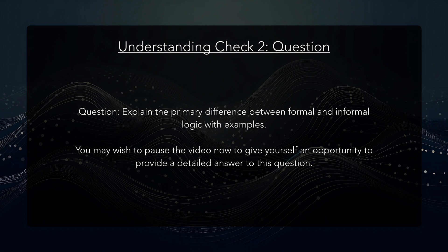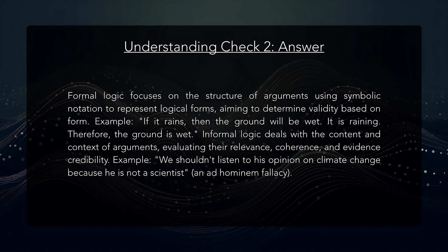Let's take a look at a second question to check our understanding of the material just presented. You may wish to pause the video now to give yourself an opportunity to provide a detailed answer. Question: Explain the primary difference between formal and informal logic with examples. Answer: Formal logic focuses on the structure of arguments using symbolic notation to represent logical forms, aiming to determine validity based on the form. Example: if it rains, then the ground will be wet; it is raining; therefore the ground is wet. Informal logic deals with the content and context of arguments, evaluating their relevance, coherence, and evidential credibility. For example, 'we shouldn't listen to his opinion on climate change because he's not a scientist' is an ad hominem fallacy.